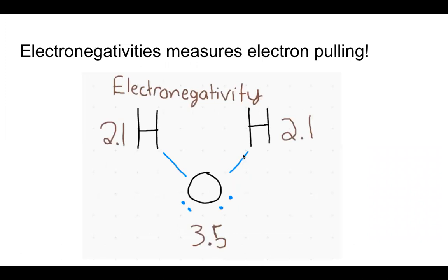The electronegativities measure the electron pulling. So I've labeled the electronegativities. Notice how hydrogen's got 2.1 for both of them and oxygen has 3.5. If we were to compare these, we would say, wow, oxygen stronger. 3.5 is bigger than 2.1. The difference is 1.4.